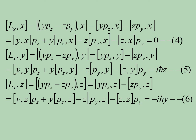Now we have to take the commutation relation between Lx and x. Using the formula for [AB, C], we can expand [Lx, x] as: [Y, x]Pz + Y[Pz, x] minus Z[Py, x] minus [Z, x]Py. Here the first term is 0, the second term is 0 because [Pz, x] = 0, [Py, x] = 0, and [Z, x] = 0. So this term is equal to 0.